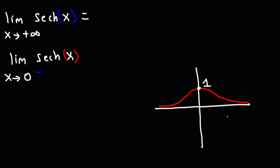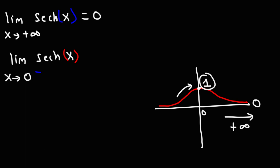As x approaches positive infinity, the y-value is 0 — we're going closer and closer to the x-axis. As x approaches 0 from the left, following the curve towards an x-value of 0, the y-value is 1. The best way to evaluate the limits of hyperbolic functions, in my opinion, is to draw the graph. As long as you know the graphs of these hyperbolic functions, it's going to be easy — or relatively easy — to evaluate the limits.